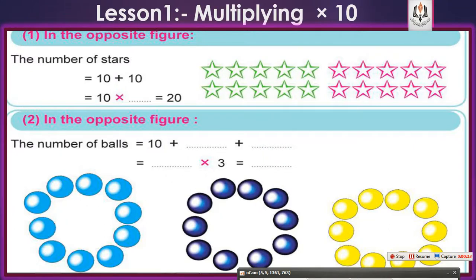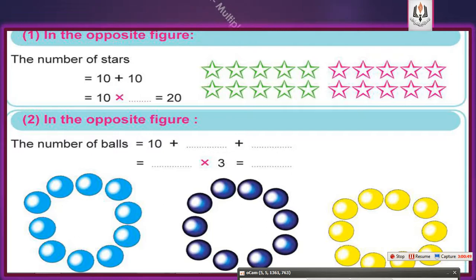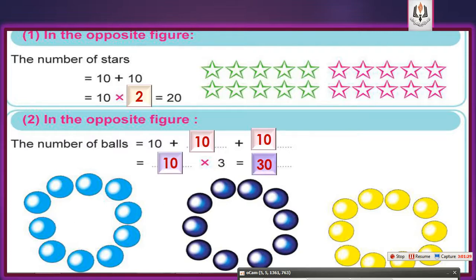Look at the opposite figure. The number of green stars is 10, and also the number of pink stars is 10. 10 plus 10 equals 10 times 2, because 10 is repeated 2 times. How many groups of balls can you see? I have 3 groups, each group has 10.